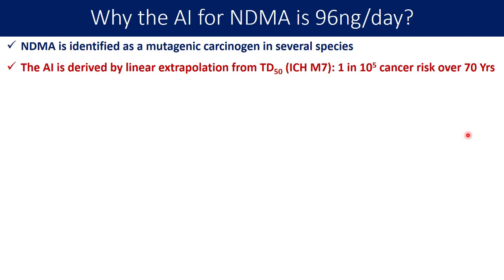Once you understand the TD50 value, you then determine the possibility of developing a tumour in one species out of one lakh (100,000) over an entire lifespan — with 70 years considered as the lifespan for human beings. That risk of having a tumour in one out of 100,000 species gives you the concentration for your acceptable intake. This is called the very conservative approach as defined by ICH M7.